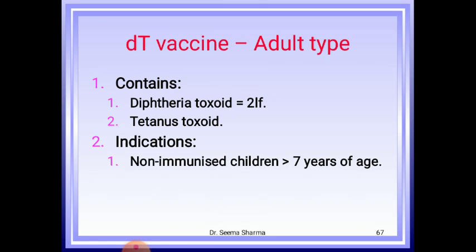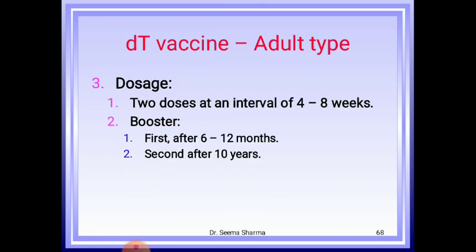DT adult type contains diphtheria toxoid and tetanus toxoid. Indication: non-immunized children more than 7 years of age. Doses: two doses at an interval of 4 to 8 weeks; first booster after 6 to 12 months and second booster after 10 years.